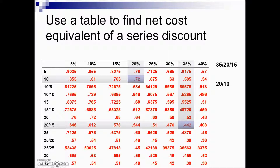It's just a matter of savings using this table. Another example: a series discount of 25%, 25%, 10%. We can find 25% across the top, then locate the 25/5 row, or alternatively go to 5% and read down until we find the 25, 25 row.